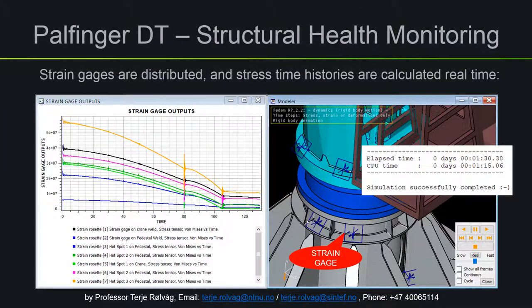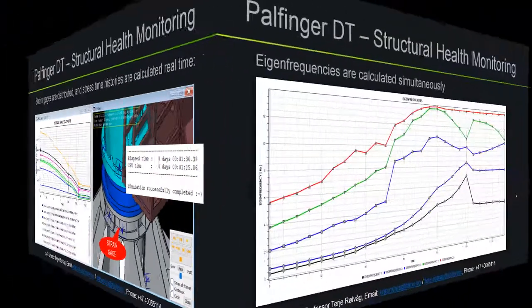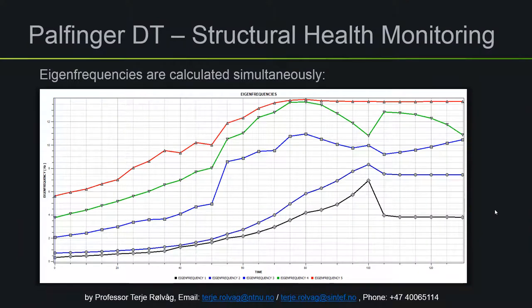Here you see the strain gauges located at the identified hotspots, and here you see the strain time histories from those gauges, which we will send to the cloud. The crane has very nonlinear behavior due to large rotations and displacements and variations in payload, and here you can see those variations causing changes in eigenfrequencies. We can use this information to detect payloads using inverse methods, and also to identify damage on the crane structure or components.